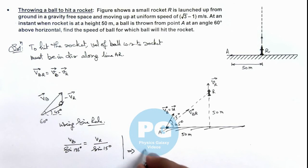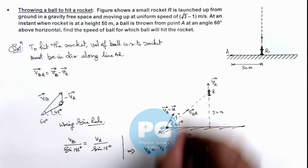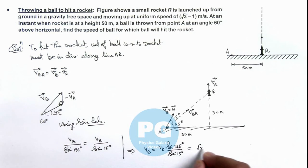And further if we simplify it, the value of v_b we are getting is v_r sin 135 degrees divided by sin 15 degrees. So this is equal to the value of v_r we are given as √3 - 1.